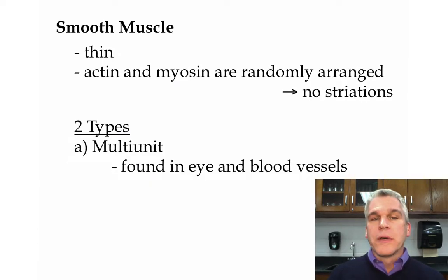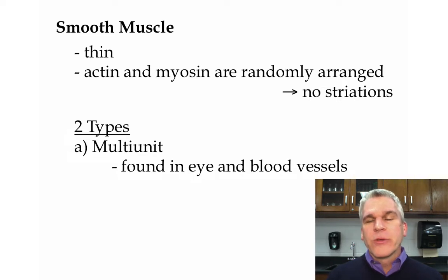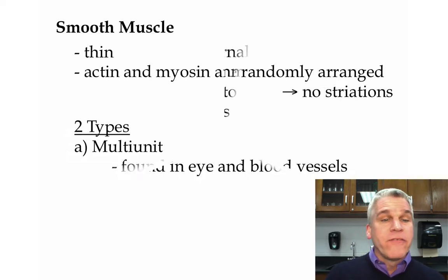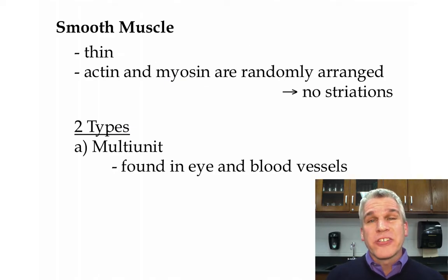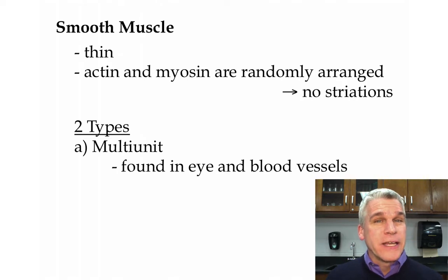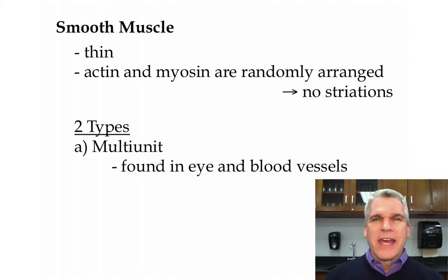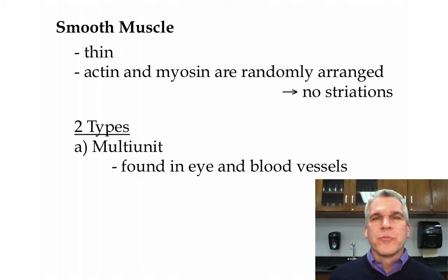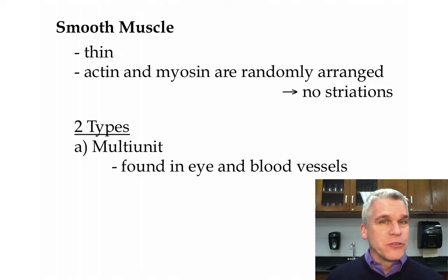There are two types of smooth muscle tissue. The first is called multi-unit smooth muscle. We find these in places like our eyes and in blood vessels, and these contractions occur pretty quickly. For instance, in the iris — the colored part of our eyes — they will change the shape of the pupil to allow more or less light in. If you've ever woken up in the middle of the night and someone turned the lights on and it's kind of painful for a few seconds, that's because it takes a moment for those smooth muscles to constrict the pupil so that less light is coming into your eyes.